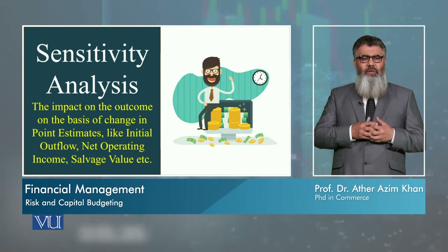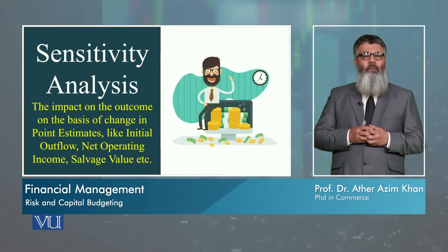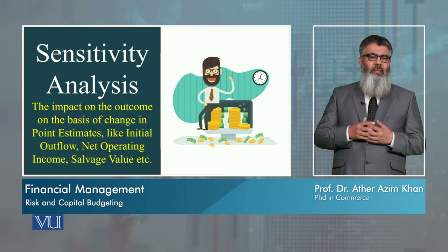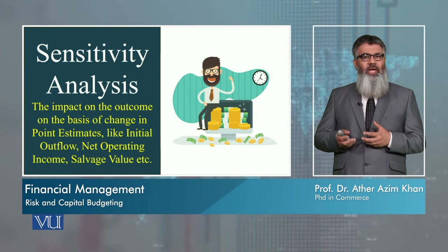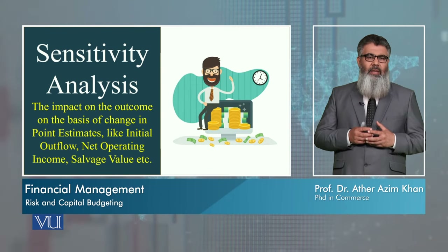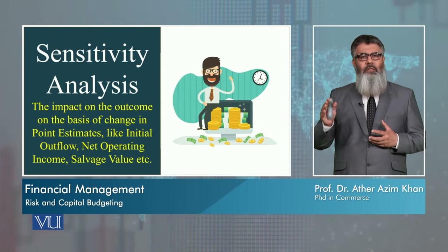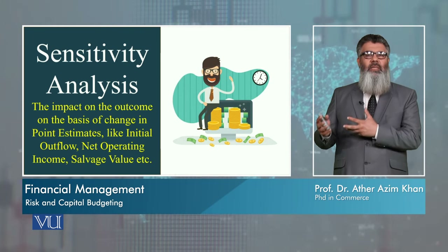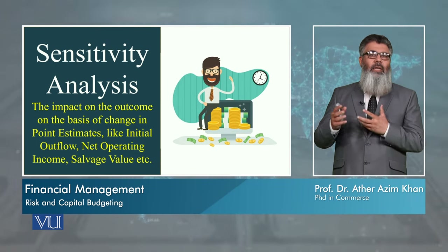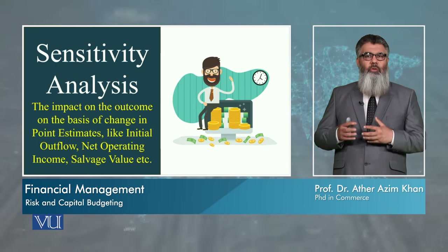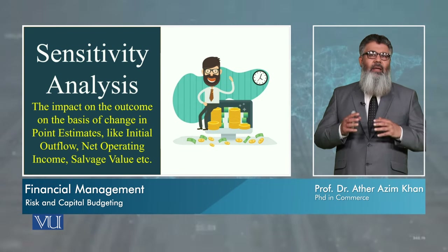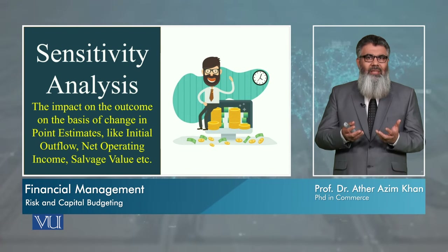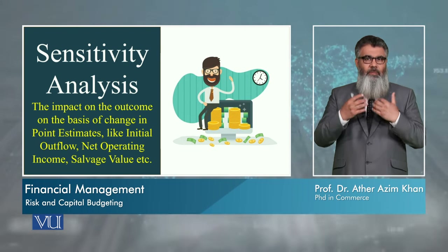Sensitivity analysis is related to the impact of outcome — meaning the results of our discounted cash flow methods — on the basis of change in our estimates. For example, in our estimates related to outflow, we thought 110 million rupees would be required but actually 120 million is required. Then how much variation in our results will come in? Is acceptance and rejection also possible? That means an acceptance can be changed to rejection or a rejection can be changed to acceptance.